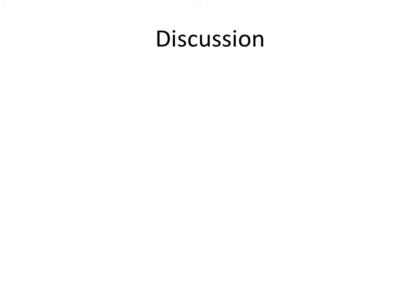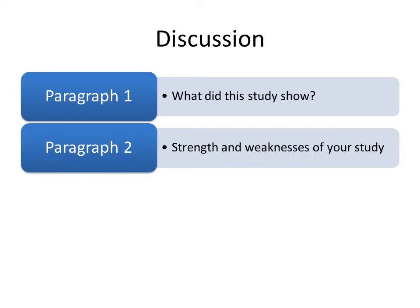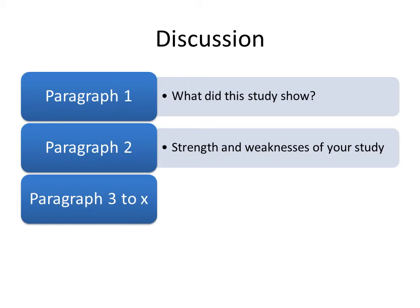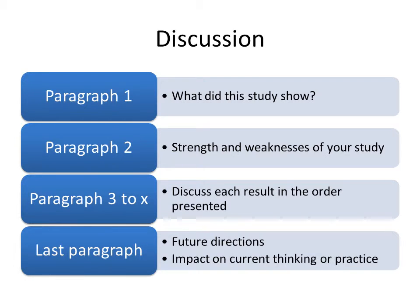As a basic structure, you should write your discussion in four paragraphs or more. The first one, describe what this study showed. The second paragraph, talk about the strengths and weaknesses of your study. The third paragraph, and up to however many you need, discuss your results in the order they were presented in the results section. And finally, in your last paragraph, speculate about future directions and the impact on current thinking or practice.